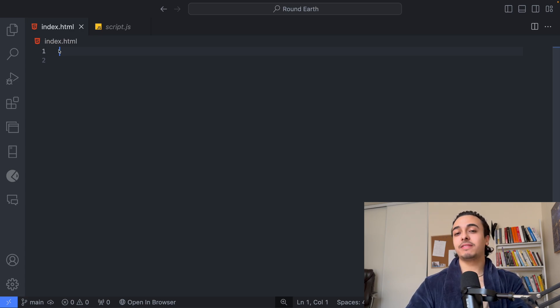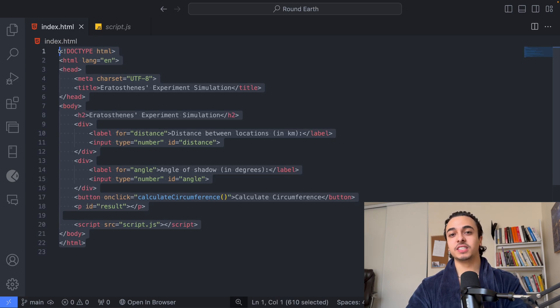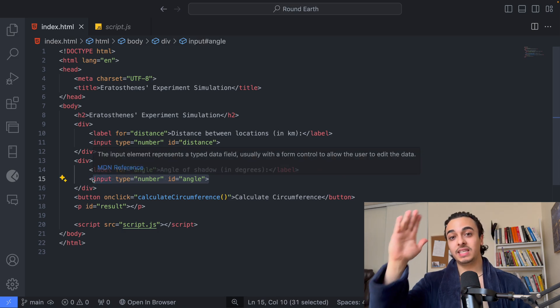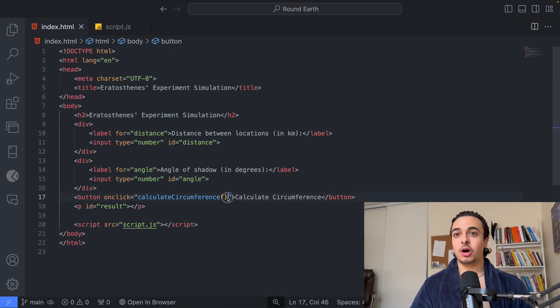So to calculate this using our code, we'll simply have to create an HTML file and display this. Here we created an input to know the distance between the two locations that we are comparing, as well as an input to calculate the angle of the shadow. All we did here was call the JavaScript function that we will have to create and call the JavaScript file.